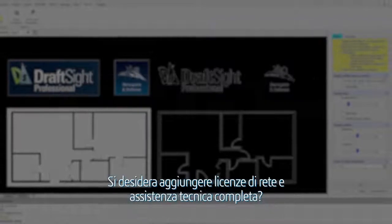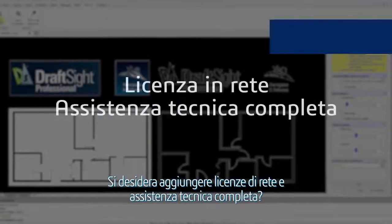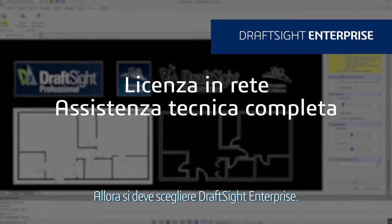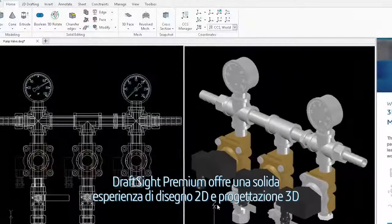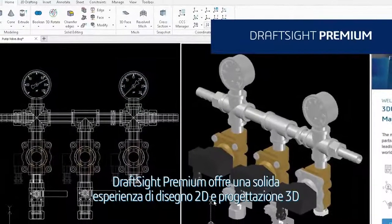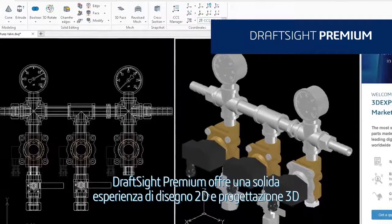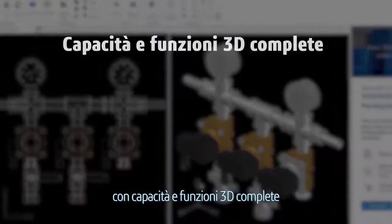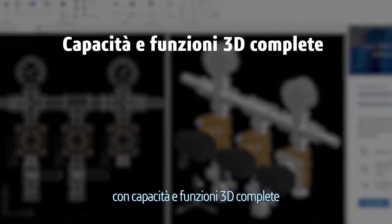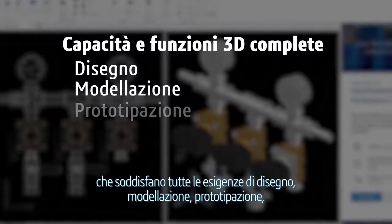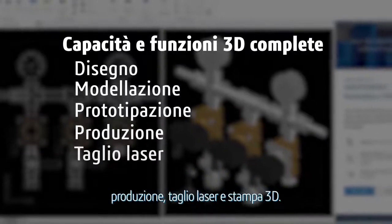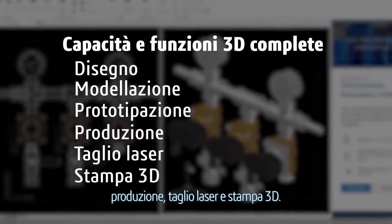Looking to add network licensing and full technical support? Then choose DraftSight Enterprise. DraftSight Premium offers a robust 2D drafting and 3D design experience with full 3D capabilities and features that meet all your drafting, modeling, prototyping, manufacturing, laser cutting, and 3D printing needs.